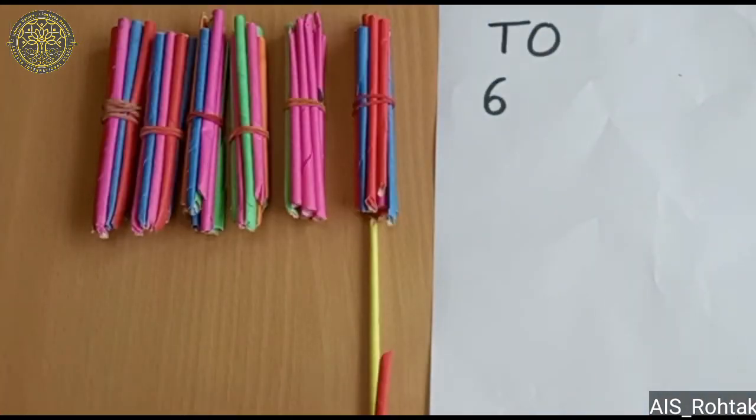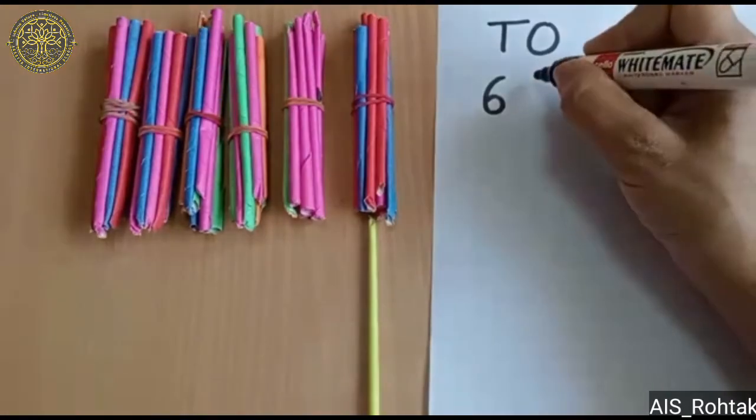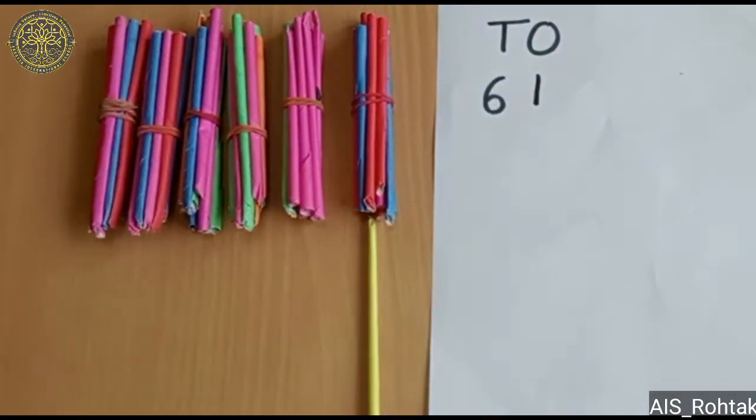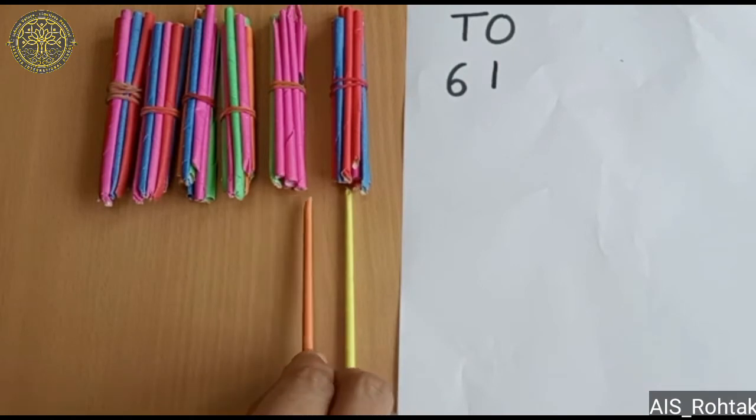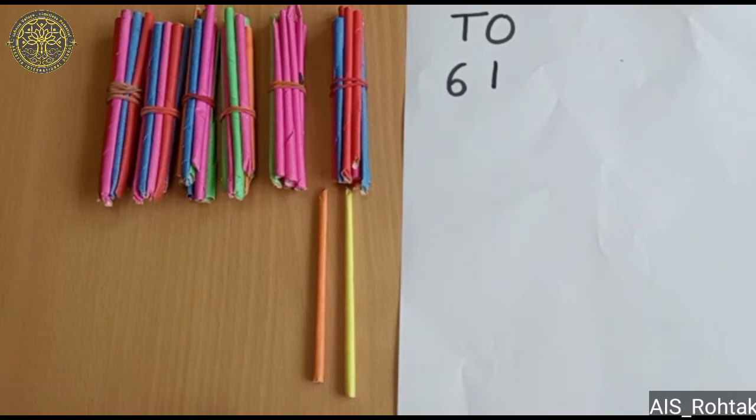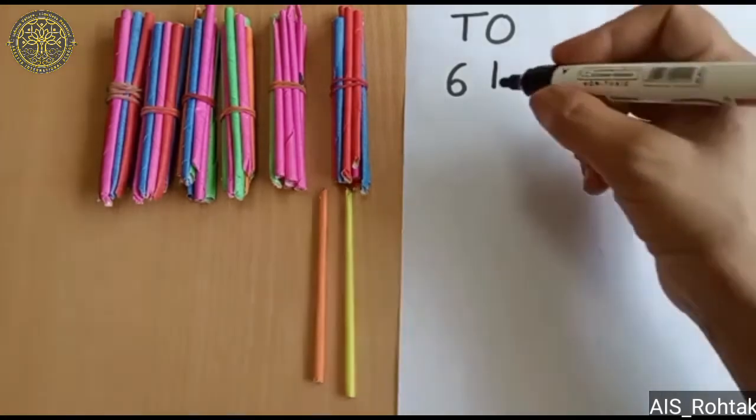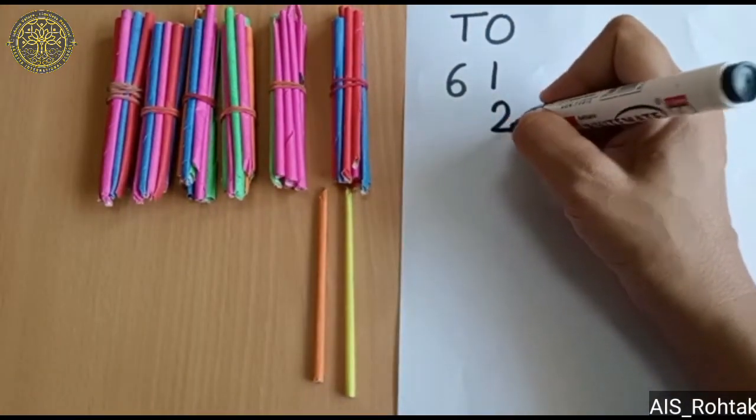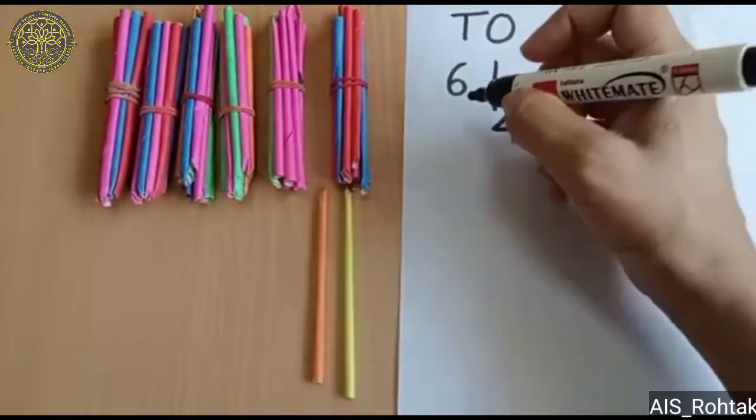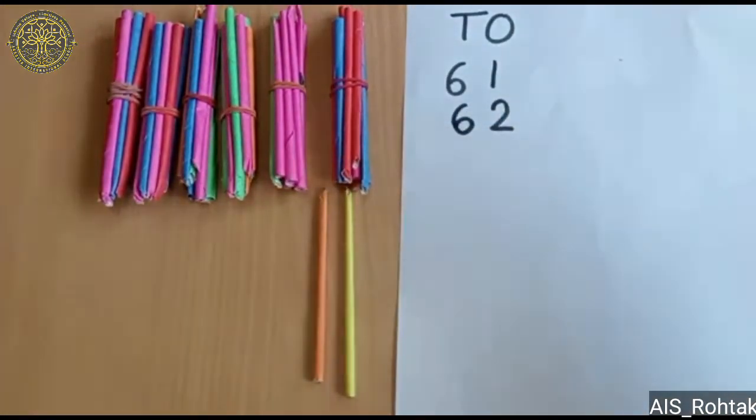Here I have one loose stick, so I can write 1 one. Here I have another loose stick. Now these are 2 ones, so I can write 2 ones and 6 tens. 62.